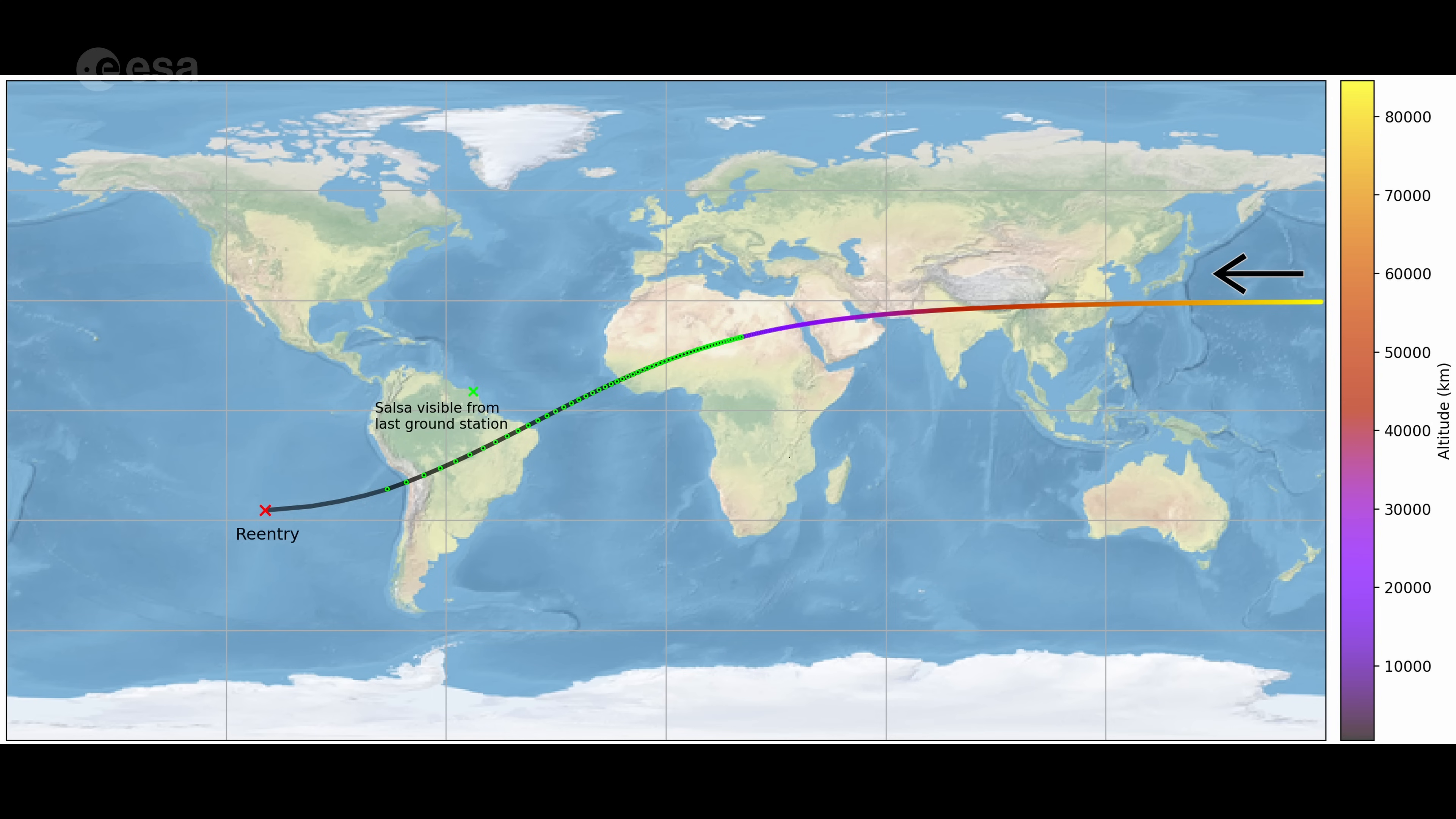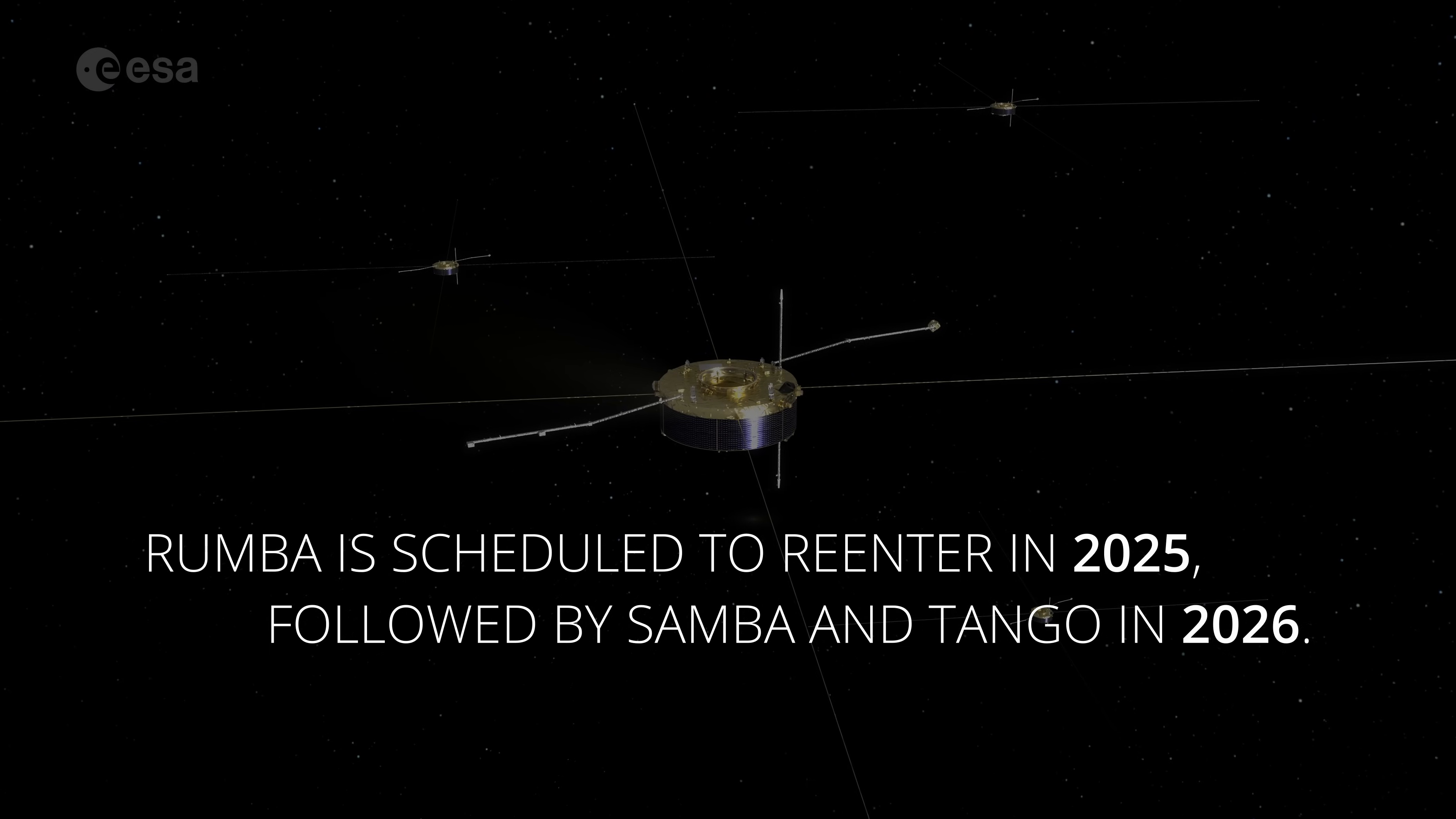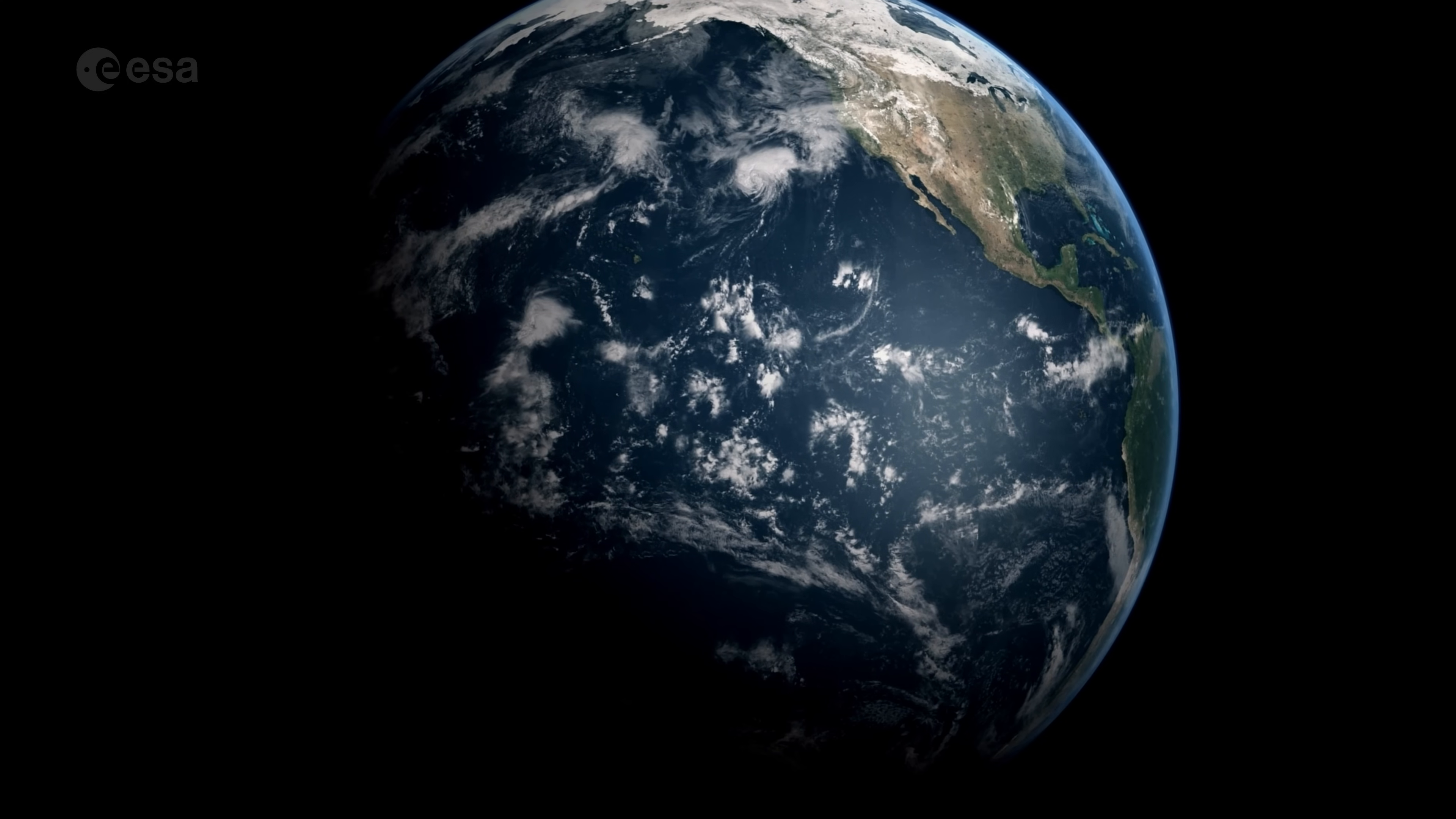Salsa's re-entry is just the beginning of the end for Cluster. The remaining three satellites will be placed in caretaker mode, awaiting their turn. Rumba is scheduled to re-enter in 2025, followed by Samba and Tango in 2026. Each re-entry will be targeted to occur over remote regions in the South Pacific, far from any densely populated areas.